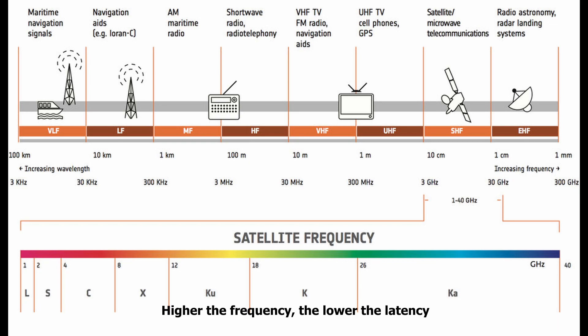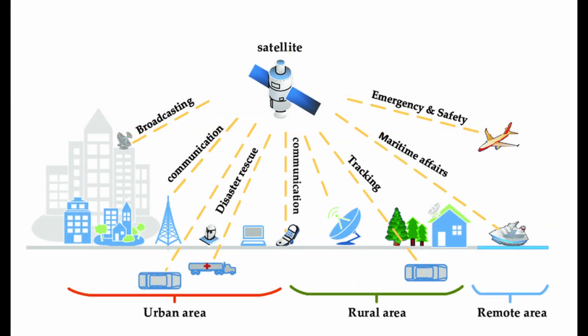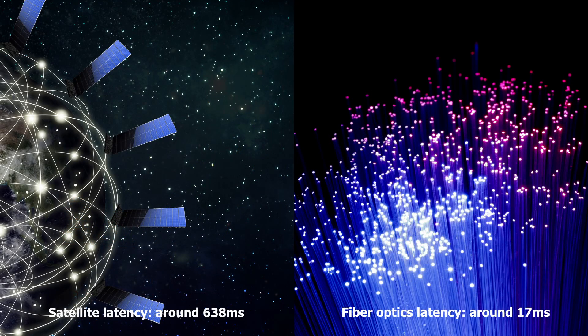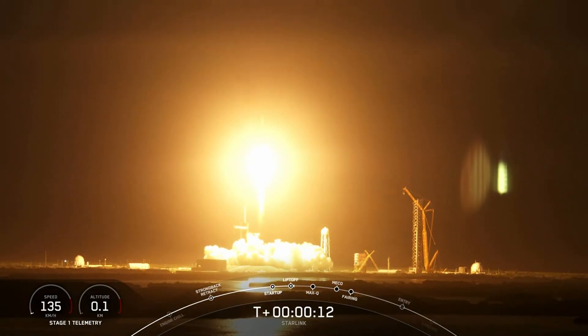On average, a satellite has around 638 milliseconds of latency. For our normal day-to-day communications, it is still acceptable. Of course, satellite latency will be slower than other technologies like fiber optics, but it's still crucial for its ability to cover very long distance communications.